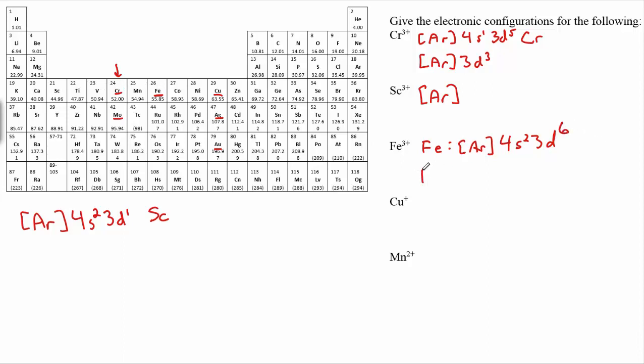That's iron. So then Fe3+, take away three electrons. Take away the two 4s's first, and then a 3d, and you'll be left with argon 3d5.